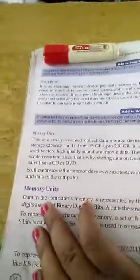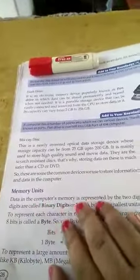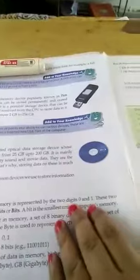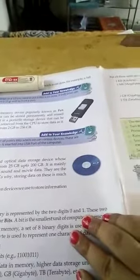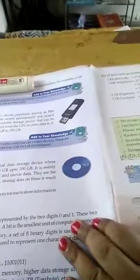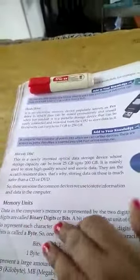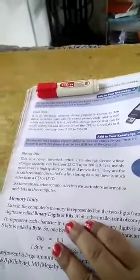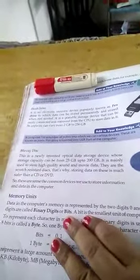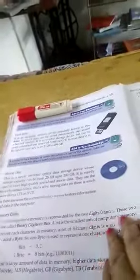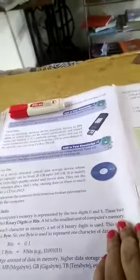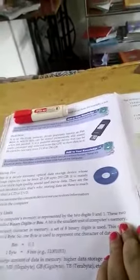Memory Units: Data in the computer's memory is represented by the two digits 0 and 1. These two digits are called binary digits or bits. A bit is the smallest unit of computer's memory.